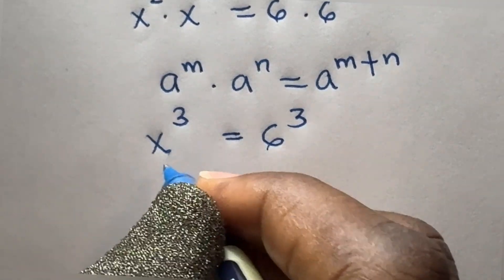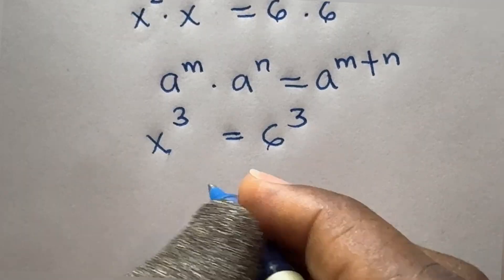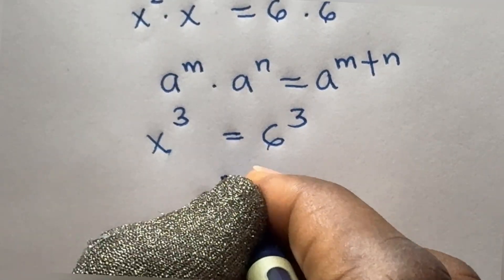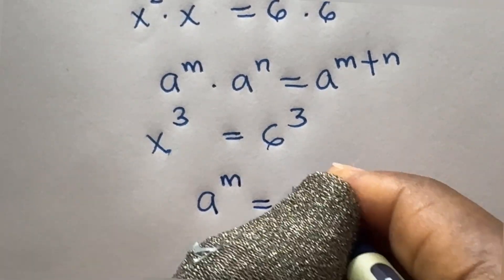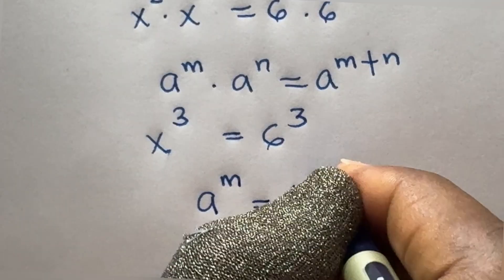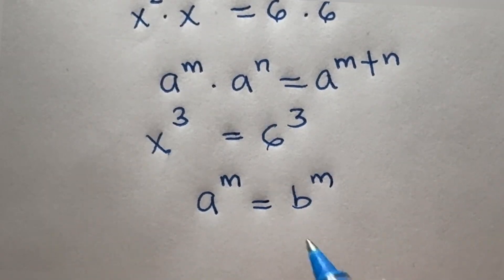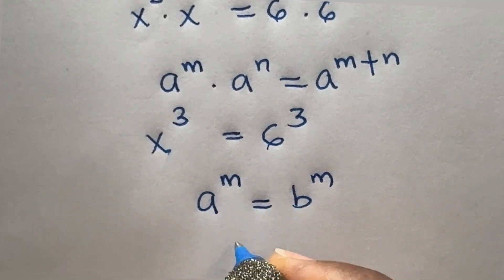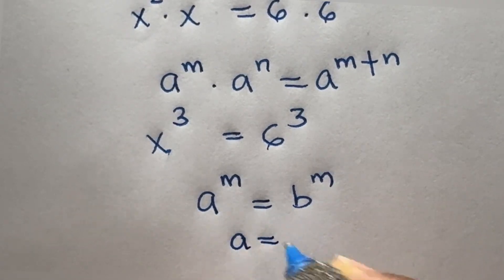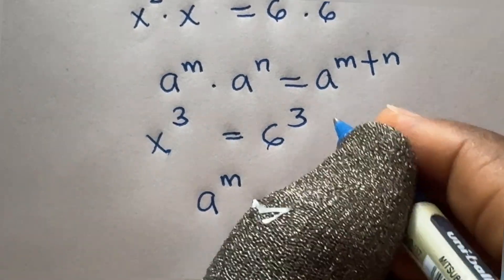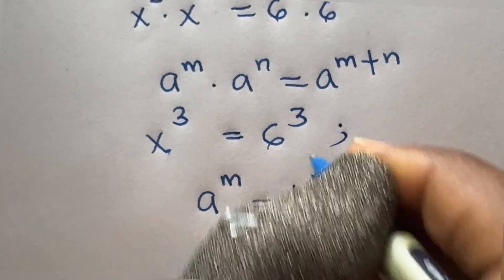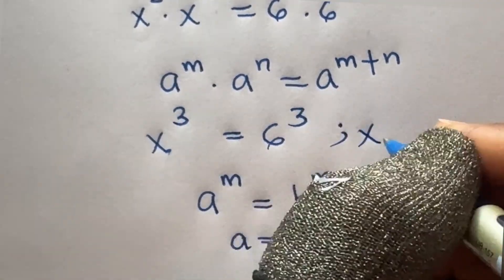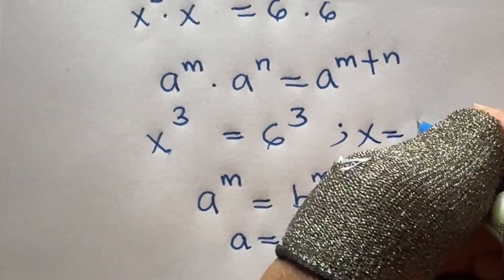By the law of indices, given a raised to power m equals b raised to power m, since the powers are the same the bases must also be the same. Since both powers are 3, we can conclude that x is equal to 6.